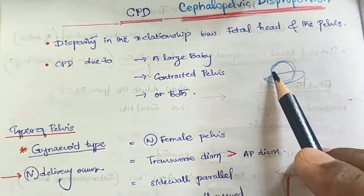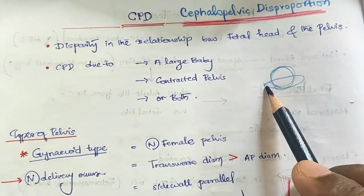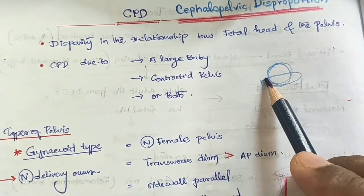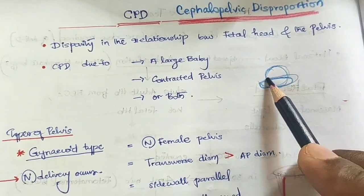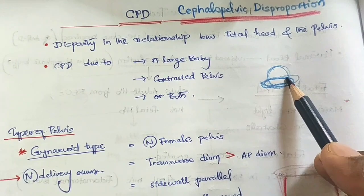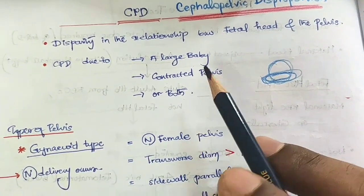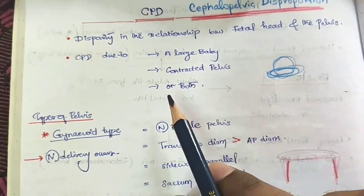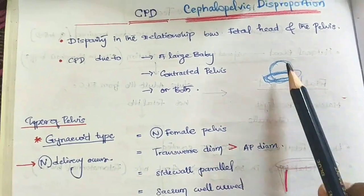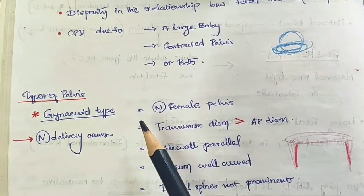A contracted pelvis is a significant cause of CPD. The types of pelvis relevant to obstetrics include the gynecoid, anthropoid, android, and platypelloid pelvis.